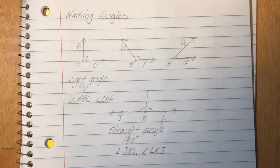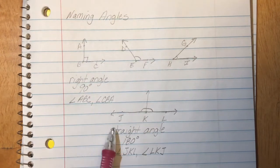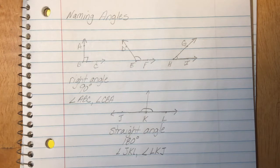Now what happens if I have an angle that's bigger or smaller than the 90 but it's not a straight angle? Well those have names too.